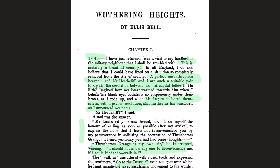Then we have the idea of 'a perfect misanthropist's heaven.' A misanthropist is someone who hates the world, and Lockwood thinks of himself as one — he thinks he's grumpy and miserable. He says, 'Mr. Heathcliff and I are such a suitable pair to divide the desolation between us,' as if they're going to bond over their shared grumpiness. His verdict of Heathcliff is 'a capital fellow.' He's writing this in retrospect — 'I've just returned from my visit to my landlord' — so these events have already happened in Lockwood's mind.